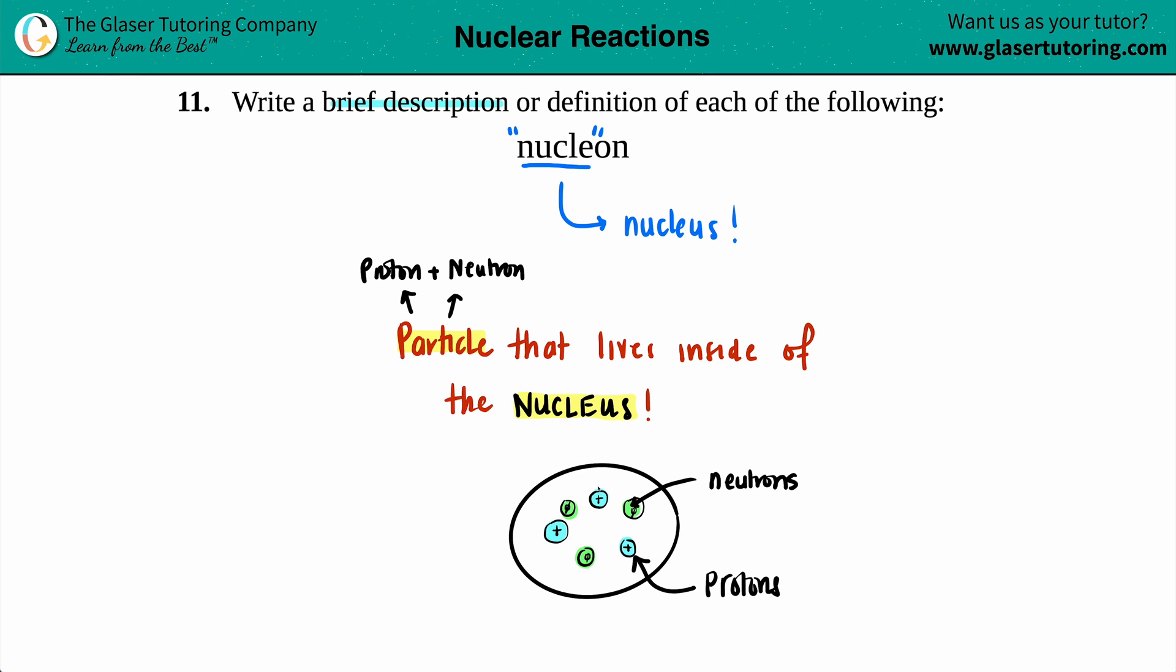The nucleus always is going to be positive, but as far as what a nucleon is, it's those particles that just exist or live inside of a nucleus. And if we want it to be even more specific, we will say that it's living inside the nucleus of an atom.